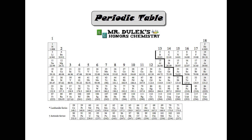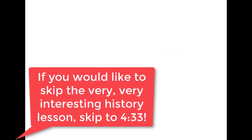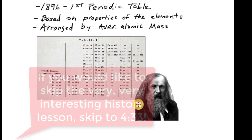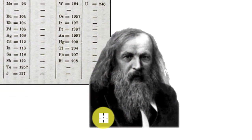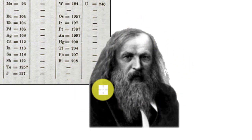So first of all, before we get too far into the actual periodic table, let's go back in time to 1896. This gentleman right here with the nice beard is Dmitry Mendeleev, and Dmitry was a Russian chemist.